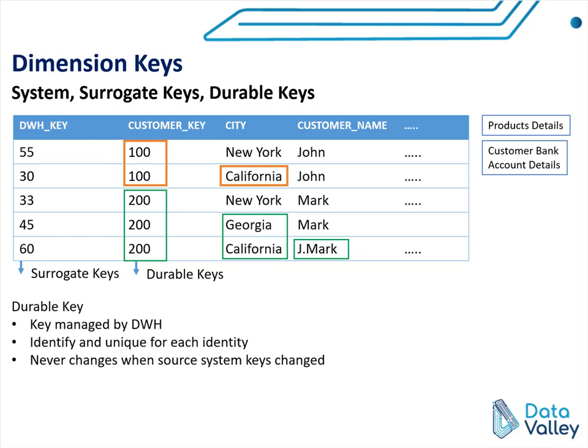If a customer changed his credit card — for example, he lost one of his credit cards and requested a new one — he is still the same customer. So we need to give this customer a durable key that does not change regardless of his credit card account numbers, his first name, or his address, so we can uniquely identify each customer regardless of changes that happen to his details.